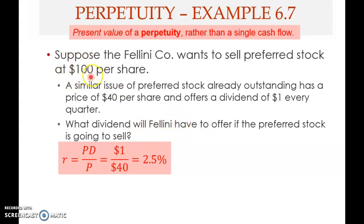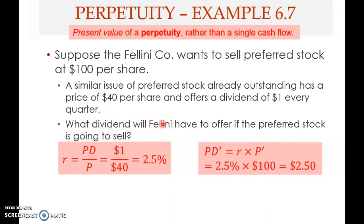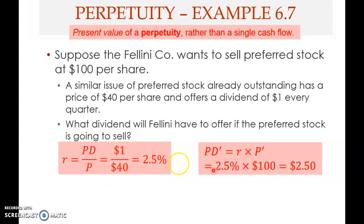We know the present value is one hundred dollars and the return is 2.5% per quarter. Using PD = r × P, we multiply 2.5% by one hundred dollars to get two dollars and fifty cents. Notice: two dollars fifty cents out of one hundred is the same return as one dollar out of forty dollars. If you pay forty dollars you get one dollar per quarter; if you pay one hundred dollars for Fellini's shares you get two dollars and fifty cents per quarter — the same return.